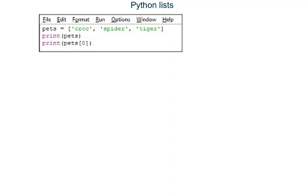In Python we can use a very useful data structure called a list. We use lists very frequently in our programs. To create a list we put the name we want to give the list, followed by an equal sign, followed by a set of square brackets inside of which are the items we want stored in our list.